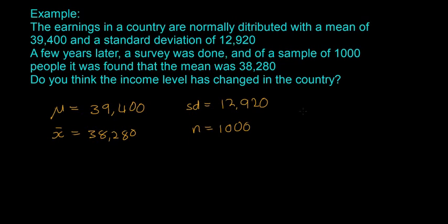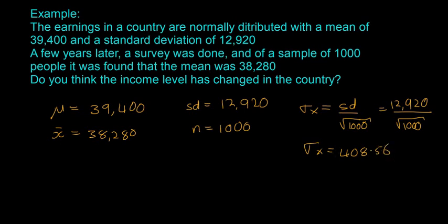And then our last thing is, I'm going to say sigma x, which is our sample standard deviation, is going to be equal to sd, which is our population standard deviation, divided by the square root of 1,000. So we took this from the central limit theorem, but you also have to use it for these confidence intervals. So I'll just write that out. It's 12,920 divided by the square root of 1,000. And that's sigma x is going to be 408.56.